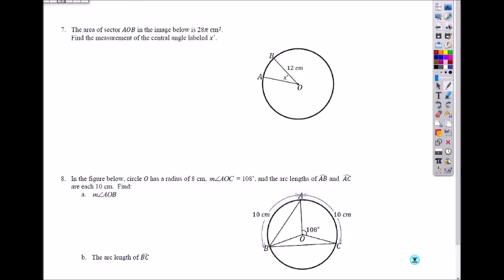Let's try this one. The area of a sector AOB in the image below is 28 pi centimeters squared. Let's find the measure of the central angle x. That's what we're looking for. x over 360 times the area of a circle, which is pi r squared. What's the radius? 12 squared.